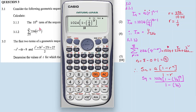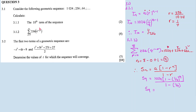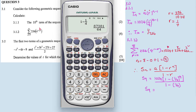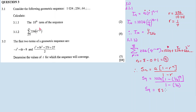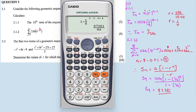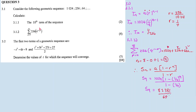So Sn equals 1024 times open bracket (1 minus (1/4) to the exponent 9) close bracket, divided by (1 minus 1/4). This equals 87381 divided by 64. That is our answer for 3.1.2. That is 3.1.2 done. Now 3.2 is another question.